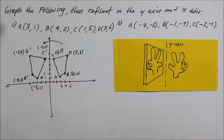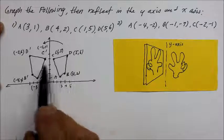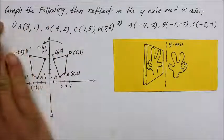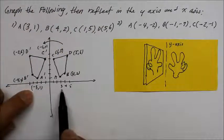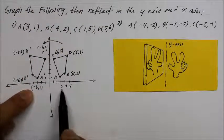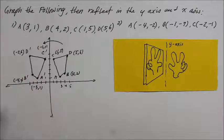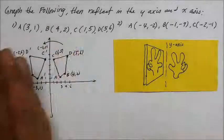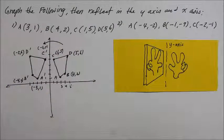So what's happening? When you reflect it over the y-axis, the x values change — they become opposite. However, the y does not change. Here's the trick: if you reflect it over the y-axis, y does not change, x changes.